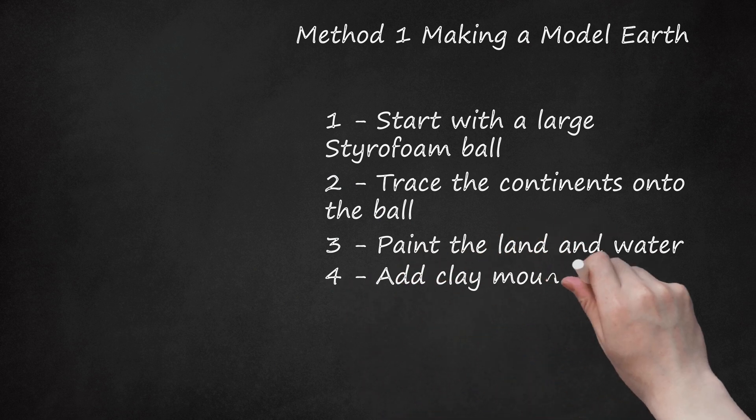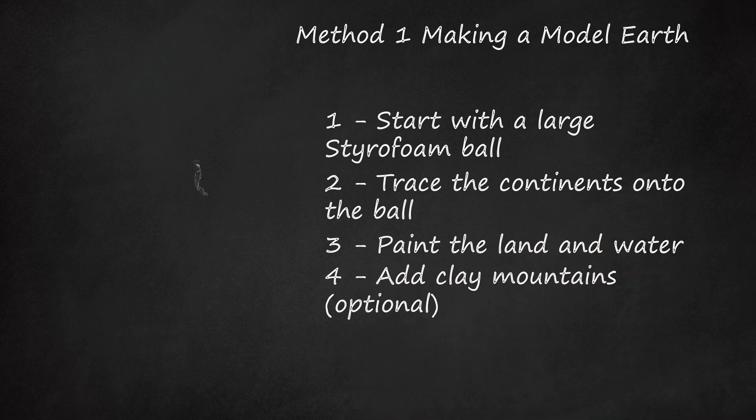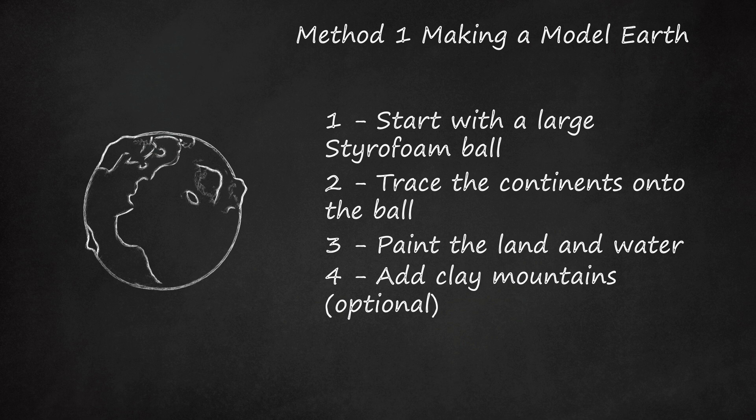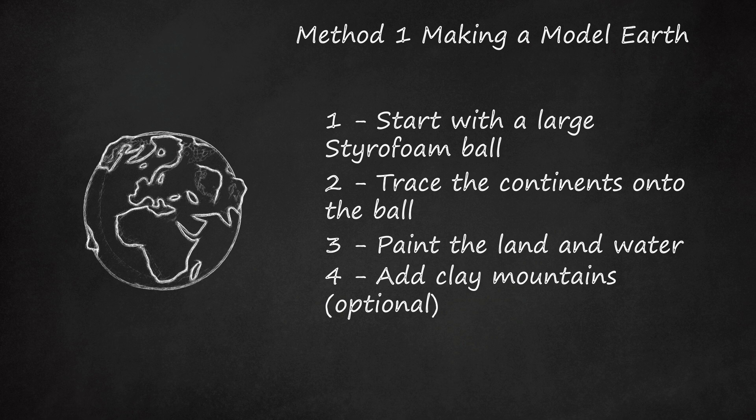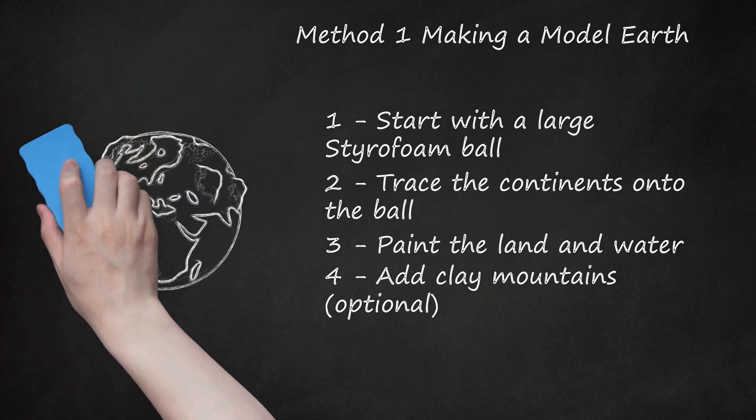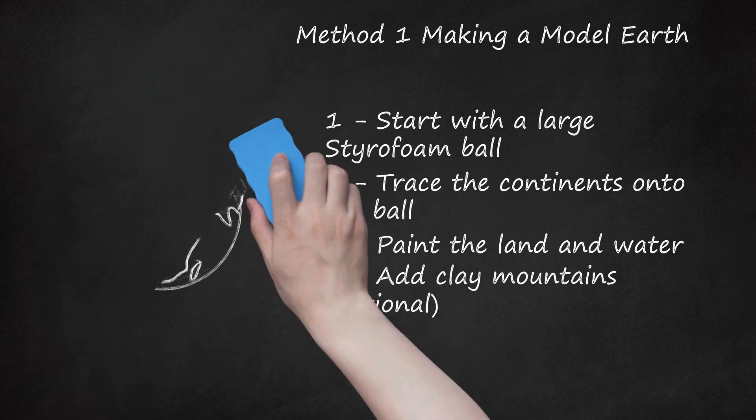Step 4: Add clay mountains (optional). Make 3D mountains out of Play-Doh or clay, then stick them onto the model. Look at a map to figure out where the mountain ranges are. Don't make them too big, or they might fall off of your model. You can use aluminum foil instead.